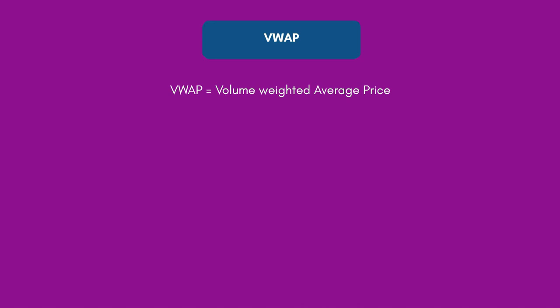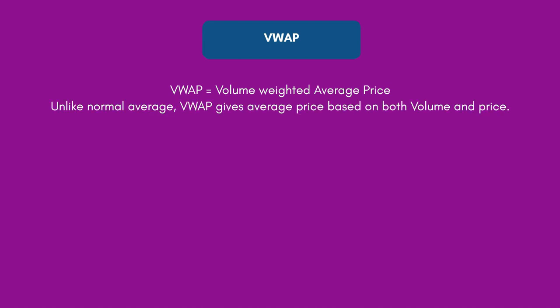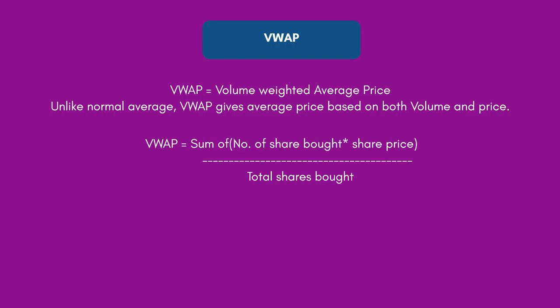VWAP is an abbreviation for Volume Weighted Average Price. This indicator takes into account both price and volume and gives us a volume weighted average price. Unlike a normal moving average like EMA or SMA — where you only have price and period to get the moving average of the last X periods — in the case of VWAP we take into account both price as well as volume.